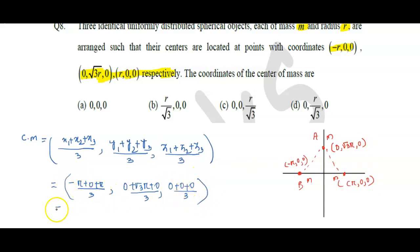Now, -R + R is 0, so the whole total answer is 0. For Y: √3R/3, which is R/√3. Here Z is 0.